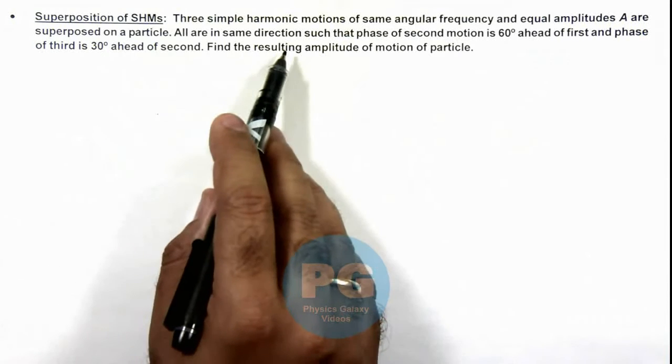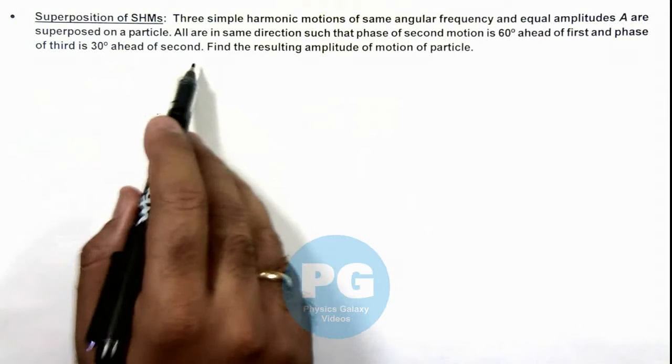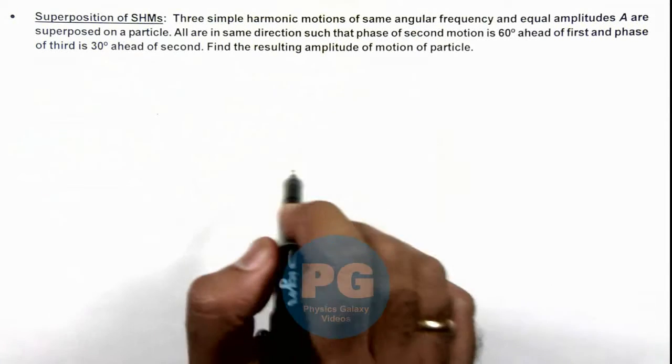All are in same direction such that phase of second is 60 degree ahead of first and phase of third is 30 degree ahead of second. And we are required to find the resulting amplitude of motion of this particle.